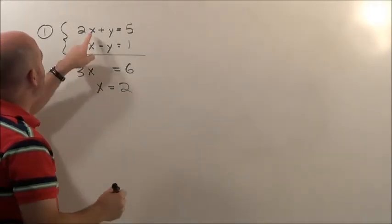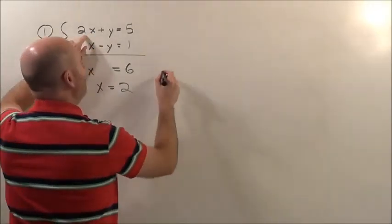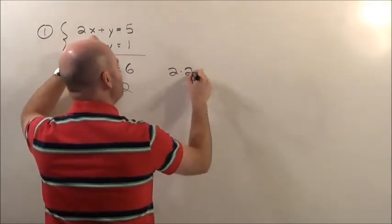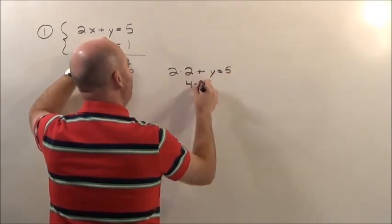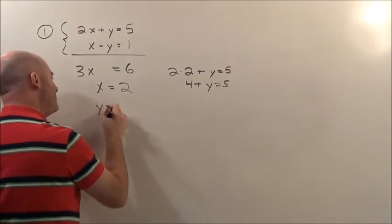Now to figure out the values I'm going to go back to this top equation or this one. I'll just go right here. 2 times x, well we just discovered x was 2, plus a y equals 5. So 4 plus whatever y is equals 5. You and I can quickly see y is equal to 1.